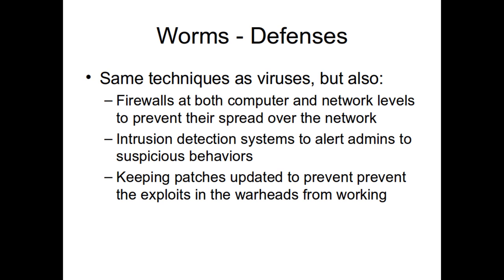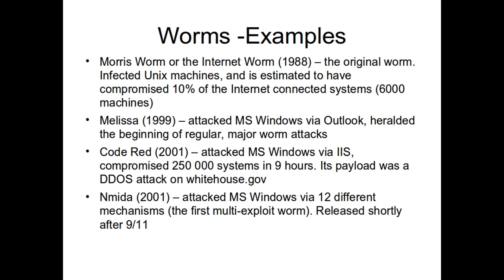The first worm, also called the Internet worm, was the Morris worm in 1988. It only infected Unix machines, but since at the time there were a lot of Unix machines connected to the Internet compared to DOS computers which didn't do much networking, it was estimated to compromise 10% of the Internet — only about 6,000 machines, so not as impressive as it sounds, but a big deal since the Internet was still new. Then there were about 10 years with only a few worms and none really major before another big one hit.